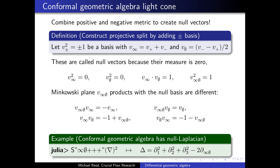In order to get the conformal geometric algebra light cone, we combine the positive and negative metric to create null vectors. This is done by taking the sum and the difference of the bases, and they have a measure of zero. Now, if we take the bivector of these, this is called the Minkowski plane, and it behaves slightly differently under the geometric product with the null vectors. It is a hyperbolic rotation, which we'll see later. And if we combine this with the differential operators, we can find the null Laplacian.